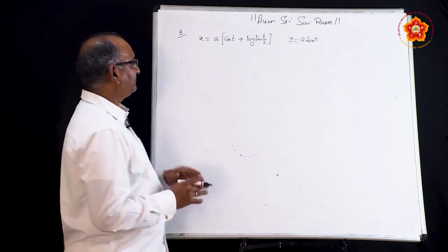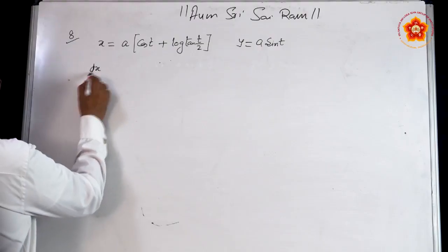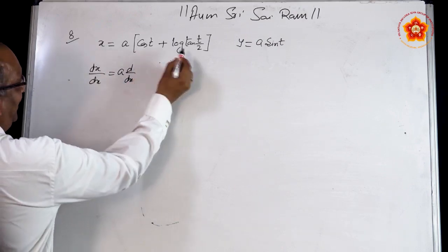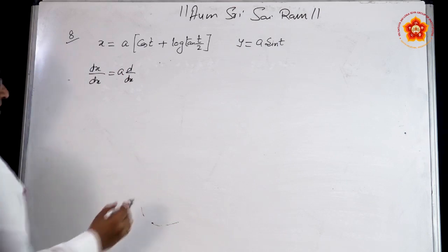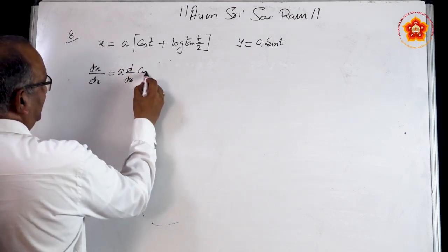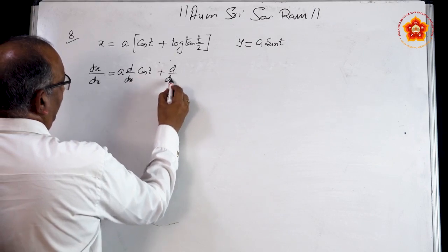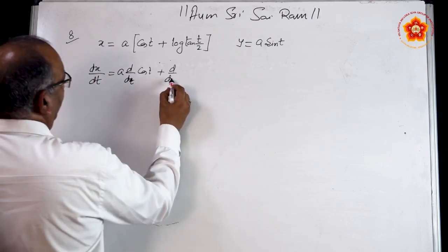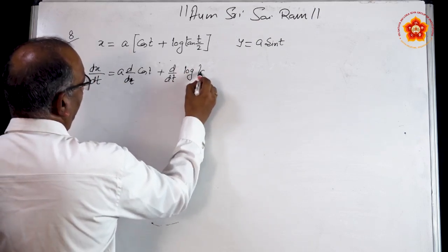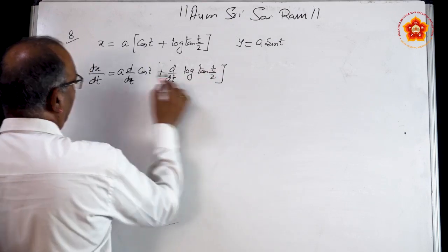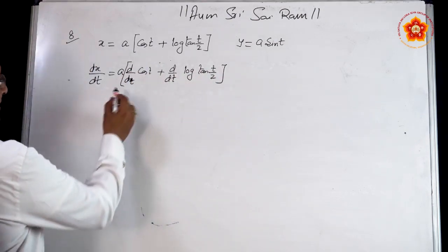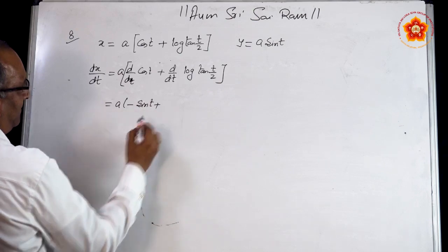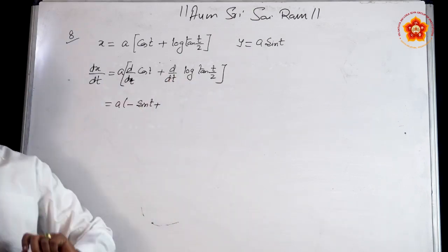So, let us begin. For dx/dt, a being a constant, put it outside the derivative sign and find the sum of two functions. We know that the derivative of the sum of two functions is the sum of their derivatives. The derivative of cos(t) is minus sin(t), plus the derivative of log(tan(t/2)).